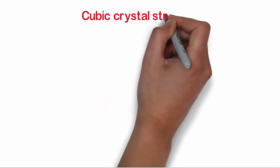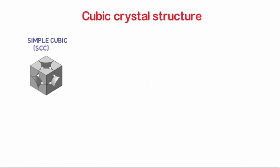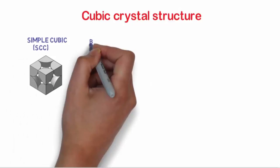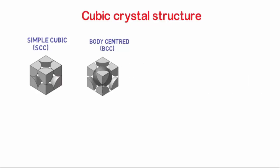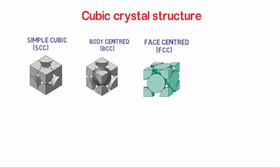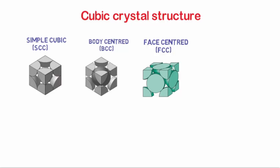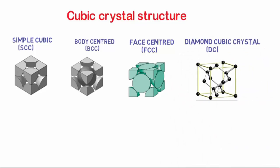Now let's see the different cubic crystal structures. There are 4 cubic crystal structures: simple cubic where atoms are at the 8 corners of the unit cell; body centered cubic where atoms are at the corners and 1 atom at the body center; face centered cubic where atoms are placed at 6 face centers and also at 8 corners of the unit cell; and the diamond cubic crystal structure, which consists of two interpenetrating FCC arrangements of atoms.